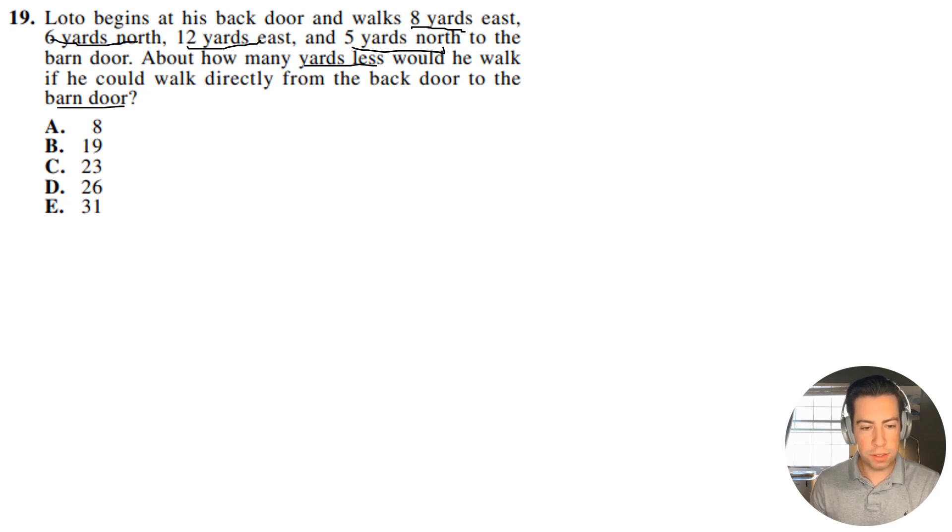All right guys, so what we have to do for this, let's just go ahead and sketch it out. So this is going to be his door. So he's going to walk 8 yards east, 6 yards north, 12 yards east, and then 5 yards north, and then he ends up at this door right here. So let's go ahead and write that out. It's going to be 8, then 6, then 12, then 5.